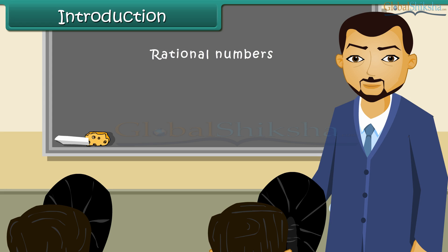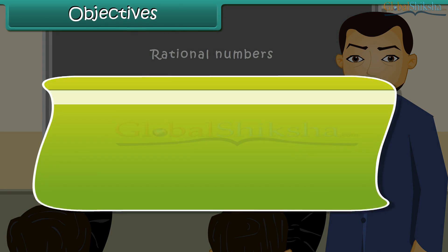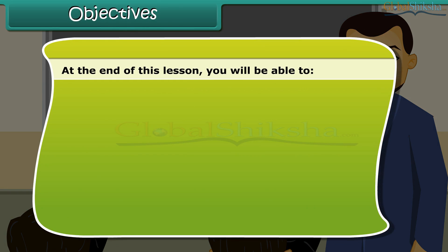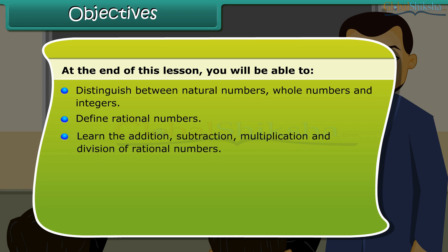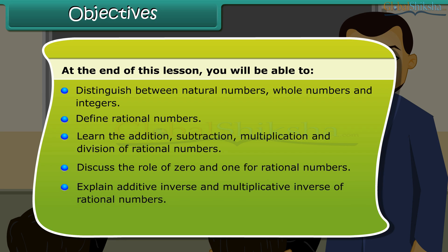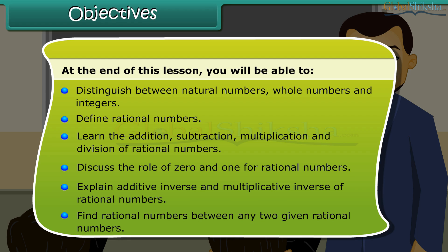Lesson objectives: at the end of this lesson you will be able to distinguish between natural numbers, whole numbers, and integers; define rational numbers; learn the addition, subtraction, multiplication, and division of rational numbers; discuss the role of zero and one for rational numbers; explain additive inverse and multiplicative inverse of rational numbers; find rational numbers between any two given rational numbers.